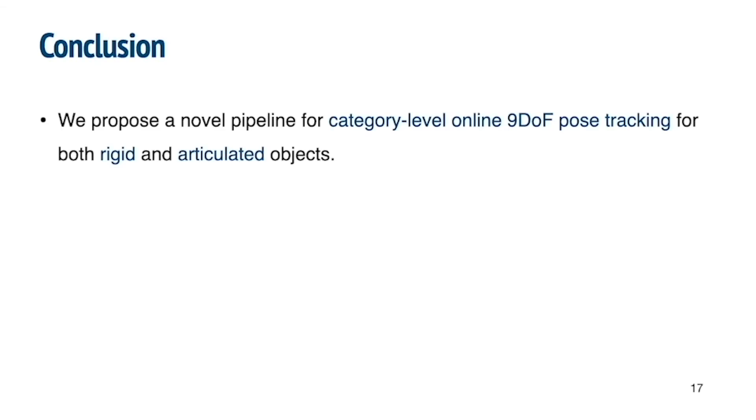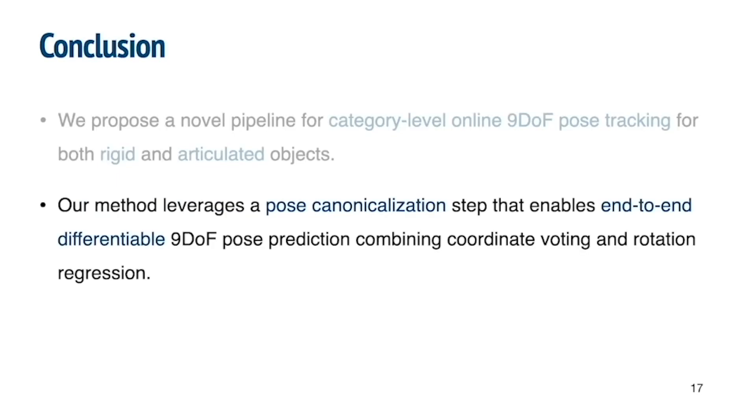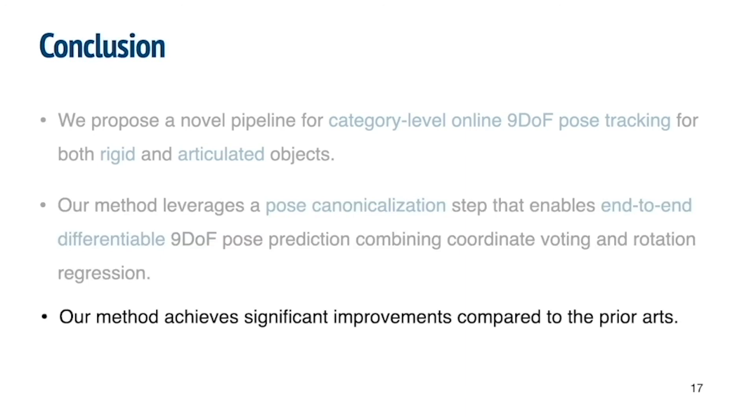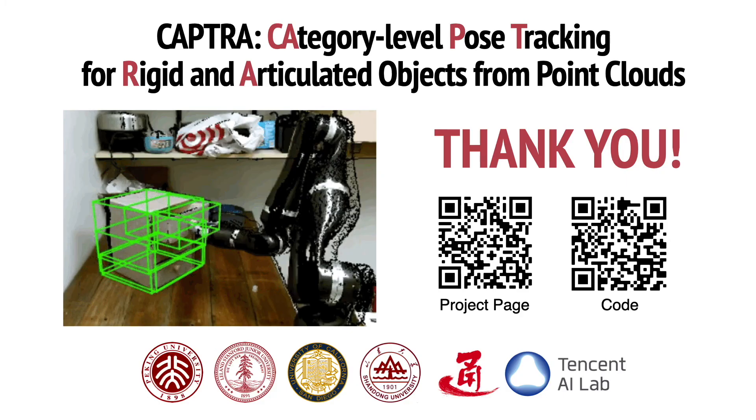To conclude, in this work, we propose a novel pipeline for category-level online 9 degrees of freedom pose tracking for both rigid and articulated objects. Our method leverages a pose canonicalization step that enables end-to-end differentiable 9-DOF pose prediction, combining coordinate voting and rotation regression. Our method achieves significant improvements compared to the previous state-of-the-art methods on all datasets. For more details, please refer to our paper. Thank you for watching.